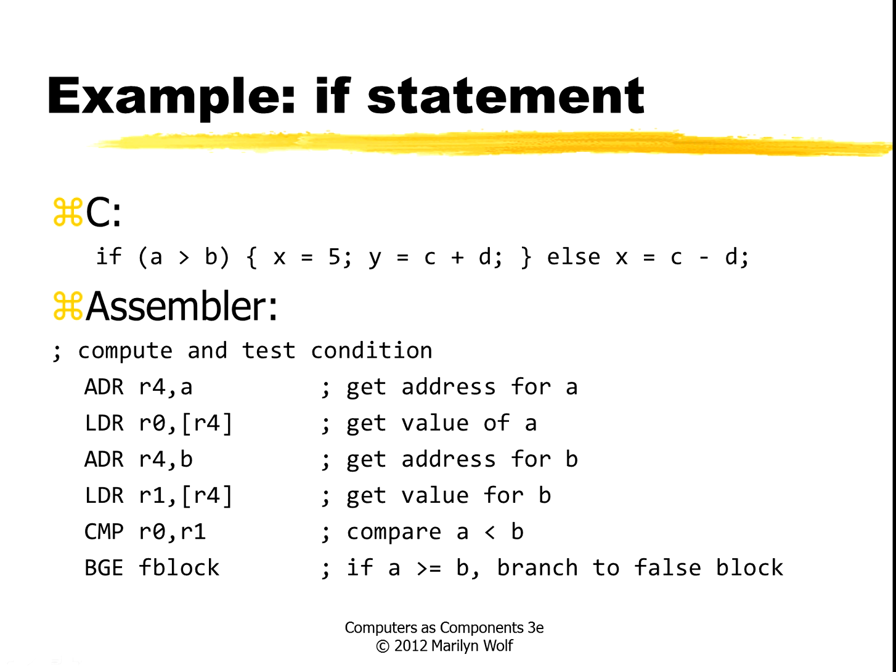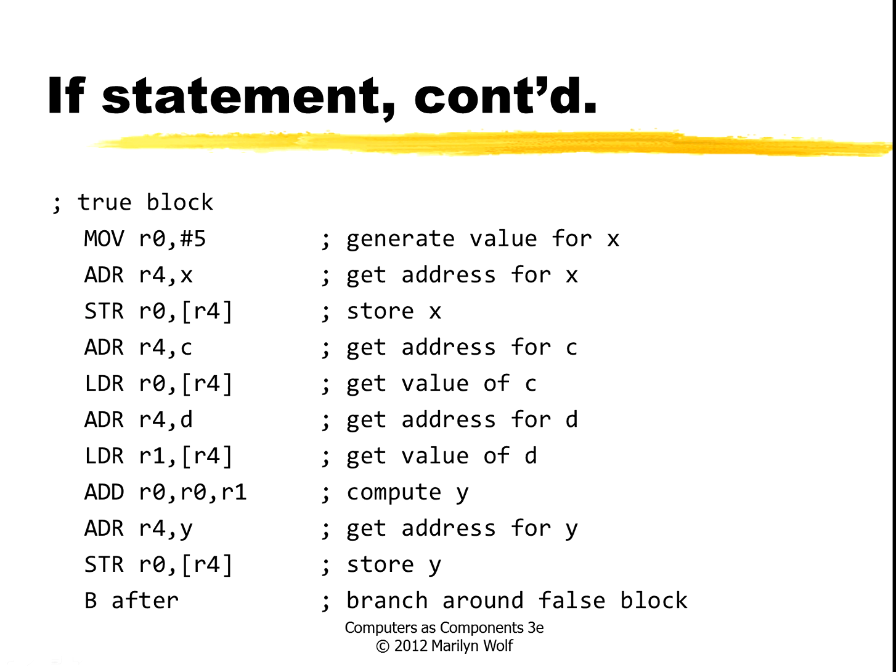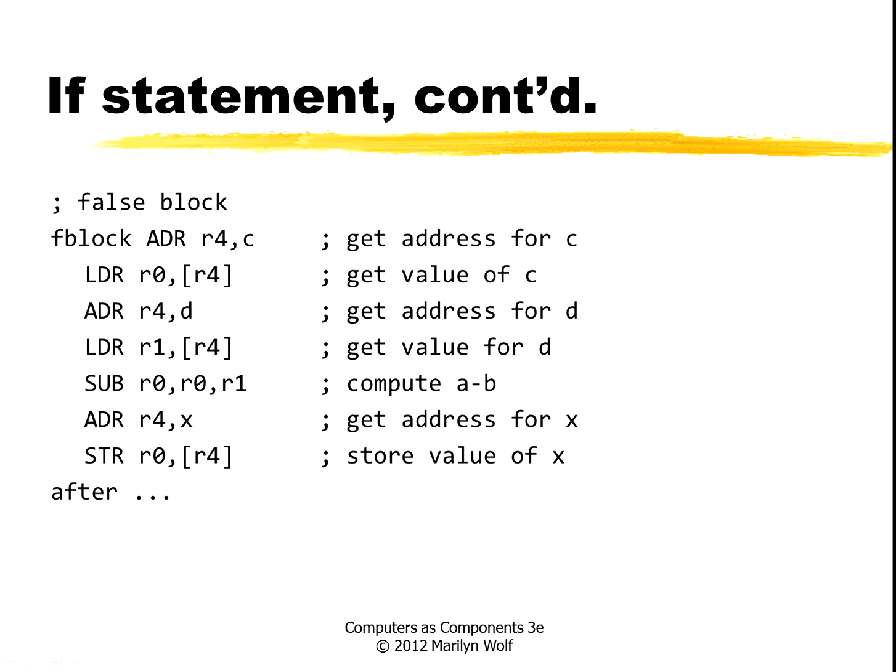Here's an if statement example. First we need to compute the test condition — we want to test A greater than B, and we do that here. Here's the comparison right here, comparing these two registers. If the comparison is false, then we're going to branch to the block that covers the else part. If the condition held, we fall through the conditional branch, perform the true part of the if, and at the end use a branch to avoid executing the else block. The else block is here — this is what's executed when the statement is false — and both the true and false blocks end up at this label.